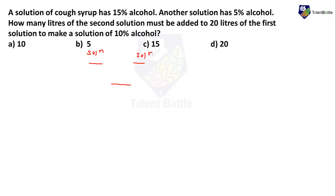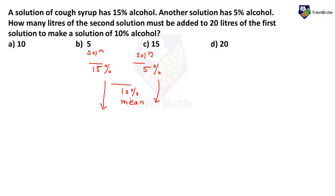We write down the first quantity, the second quantity, and then the mixture quantity. In this case we have two solutions: Solution 1 has 15% alcohol, Solution 2 has 5% alcohol. The quantity of the first solution is given as 20 liters. When we mix them, the mixture should have 10% alcohol. This target value of 10% is called the mean value in the alligation mixture concept.